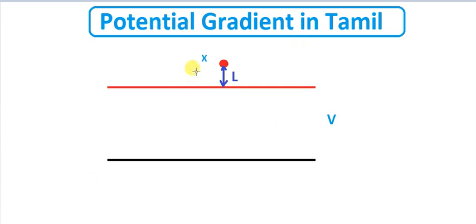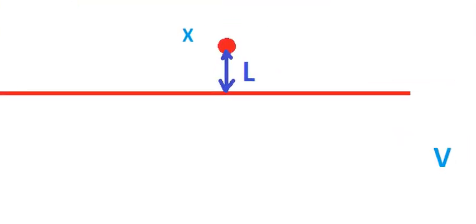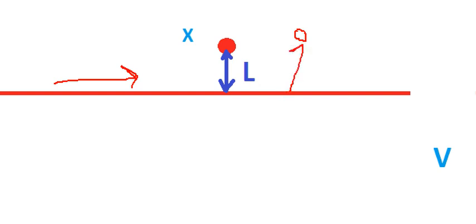If you look at the potential gradient, you will see a high voltage line. So, what is actually the line? If you look at the actual line, you will see an object. When you look at the object, this higher voltage gives much stress to the machine.